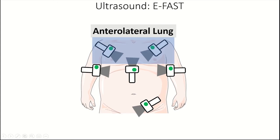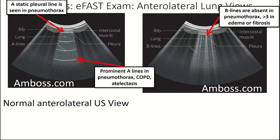The EFAST adds bilateral anterolateral lung views to check for pneumothorax or hemothorax. Here is a normal anterolateral ultrasound view. We see some ribs with rib shadowing, and then the lung, which looks like static from a TV. There are things called A lines and B lines, and the white area here is the pleural line.